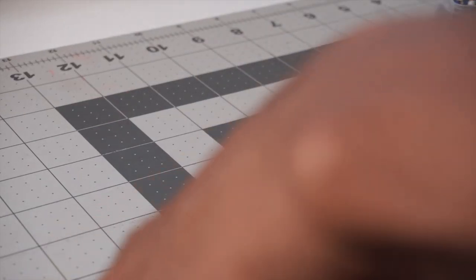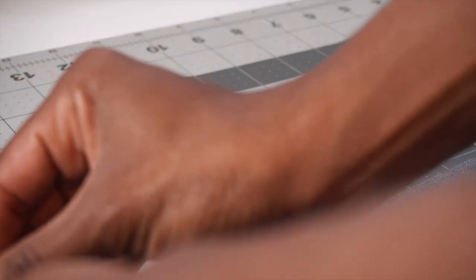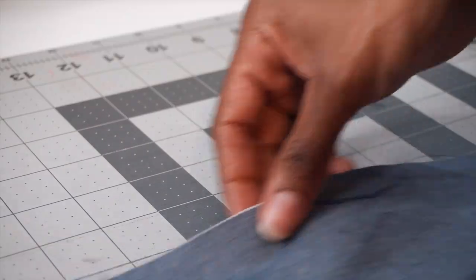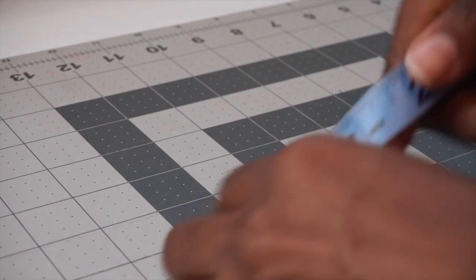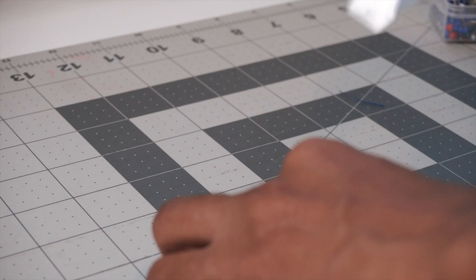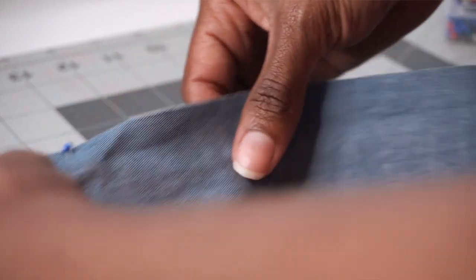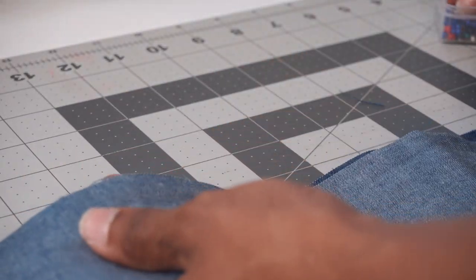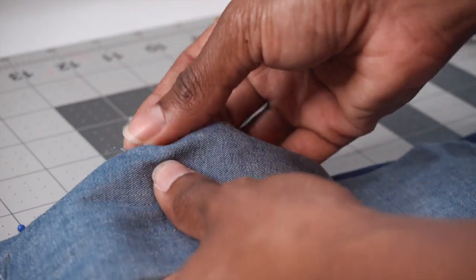I'm going to measure one inch and stick a pin right there so I know where to start and stop. And then on the other end I'm going to do the same thing. Measure my one inch and insert my pin. And so now I'm just going to go ahead and pin the rest of the fabric together so I can sew it up.